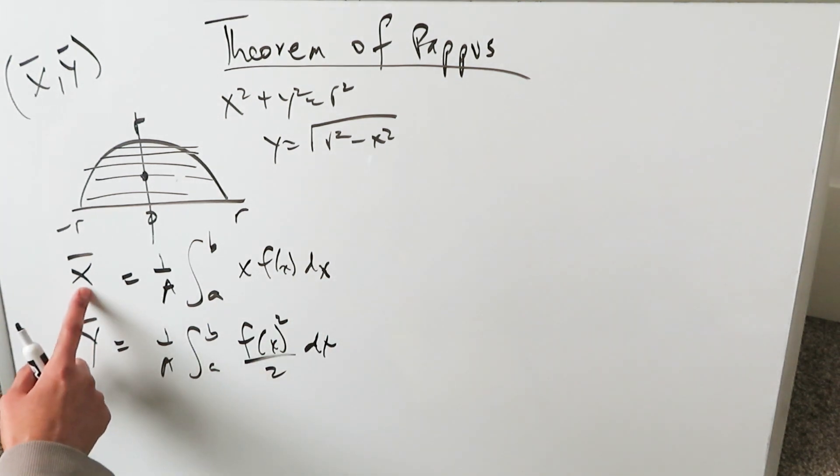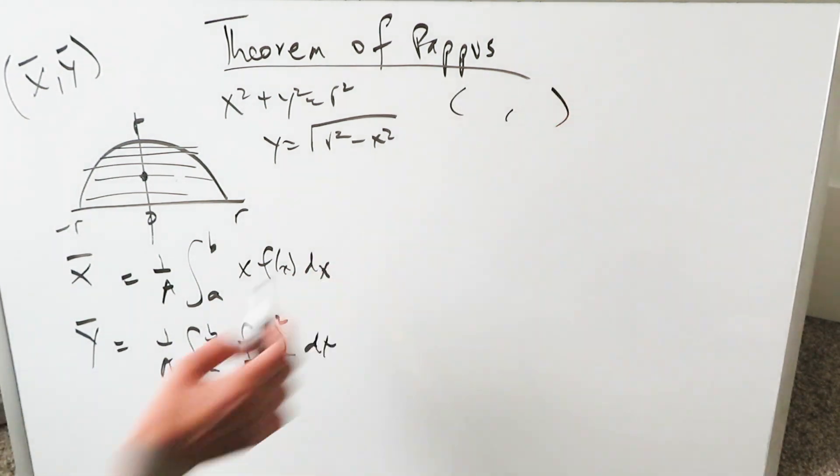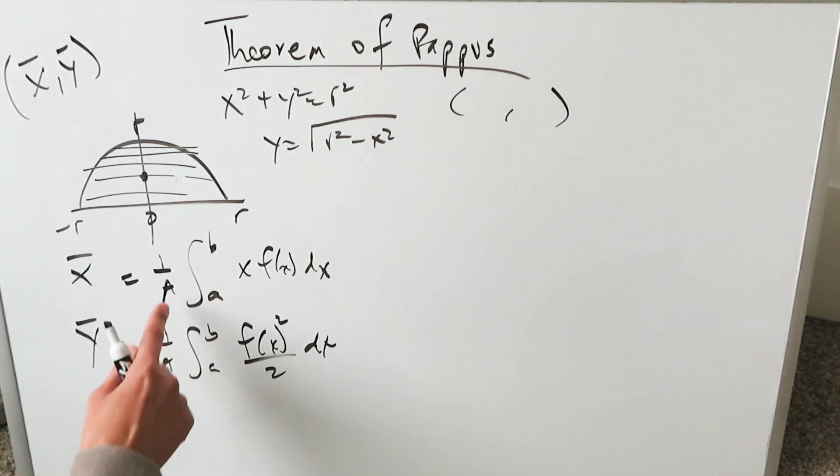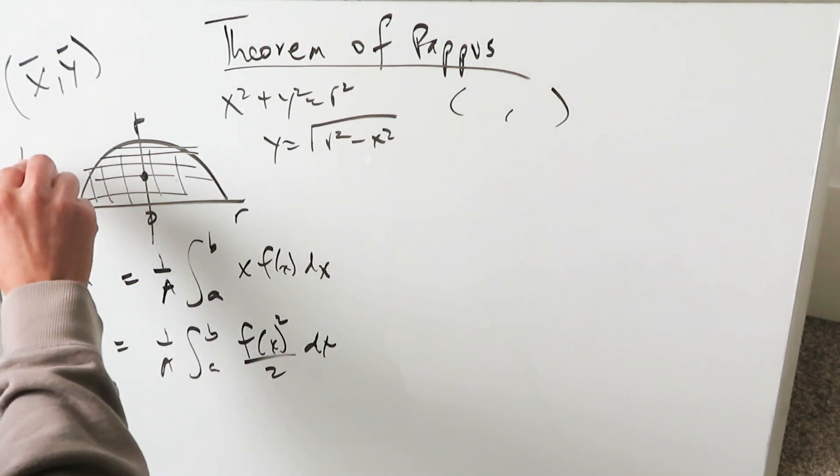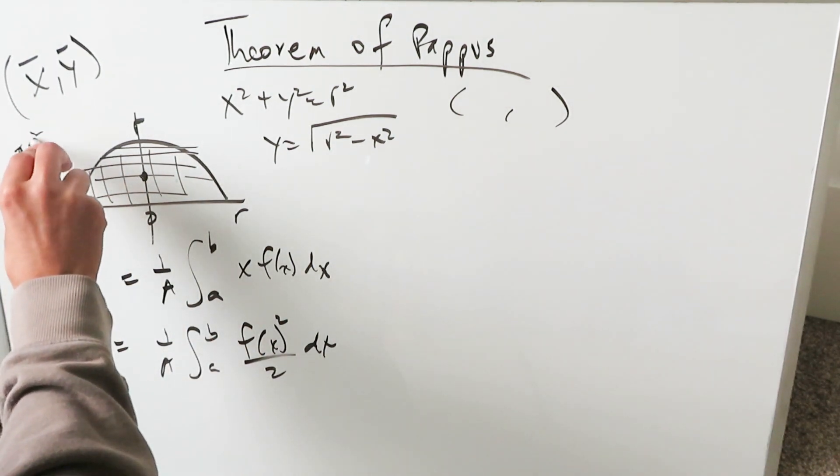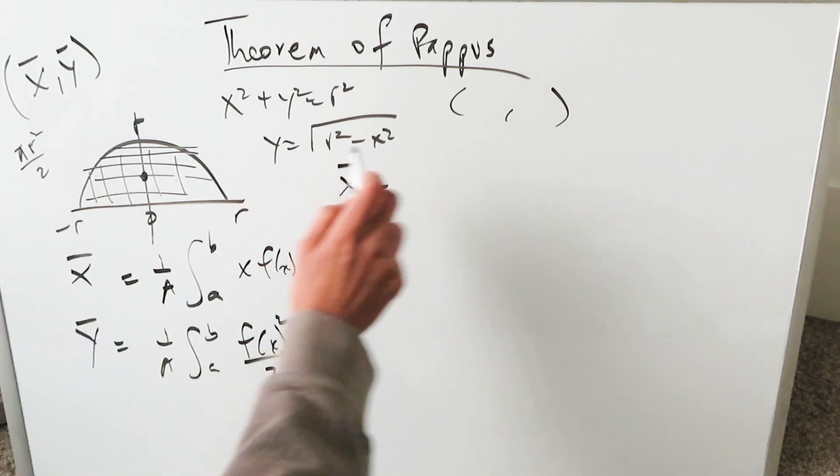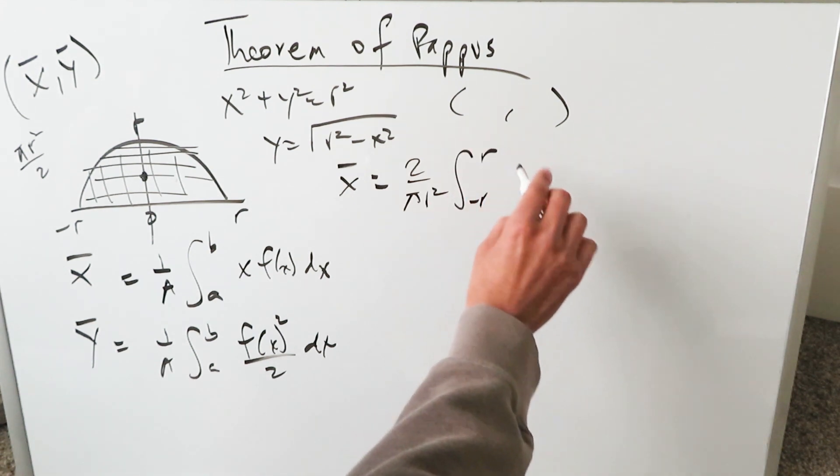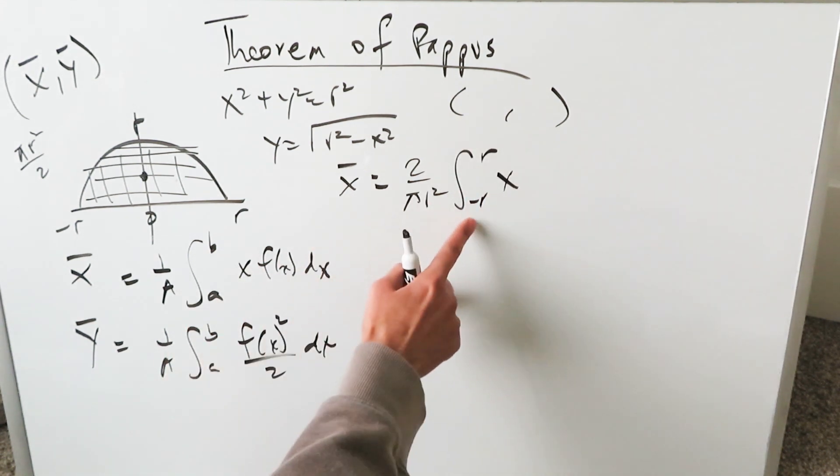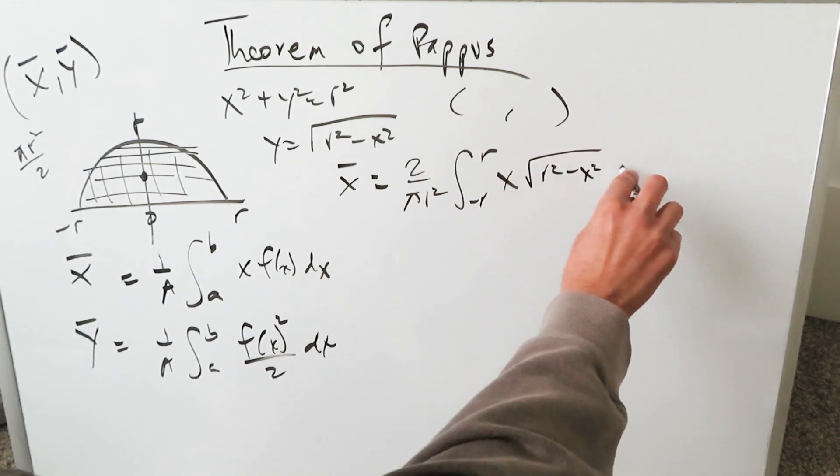Let's look at the x̄ value. Intuitively, you know it's going to be zero, but we're not going to do any shortcuts for the purposes of this video. What's the area of this? You know it's a half of a circle. The area must be πr²/2. Let's look at the x̄ calculation. It'll be the reciprocal of πr²/2, which is 2/(πr²). You have -r to r, x. Again, don't bring in the even function property.